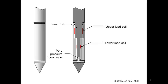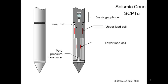Another common variant of the CPT probe is the seismic cone. Like the piezo cone, this probe measures tip resistance, side friction, and pore pressure. It is designated SCPTU, with the S standing for seismic. This probe contains a 3-axis geophone in addition to the load cells and pore pressure transducer. The geophone allows the probe to detect seismic waves. Using the geophone and a shear wave source located at the ground surface, we can determine the shear wave velocity of the soil as a function of depth. The shear wave velocity is a particularly important variable in determining liquefaction potential for cohesionless soils.